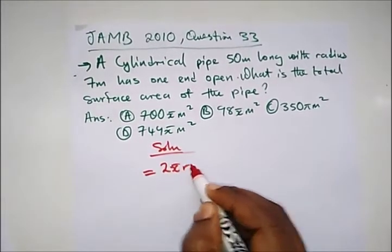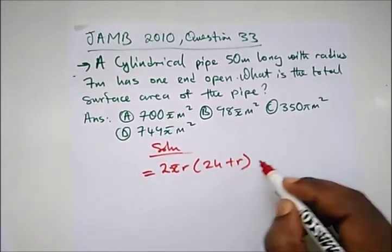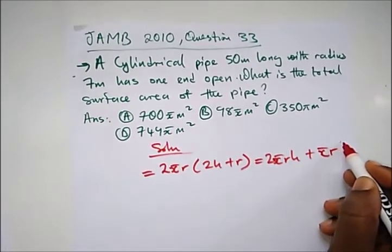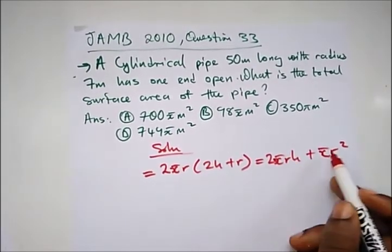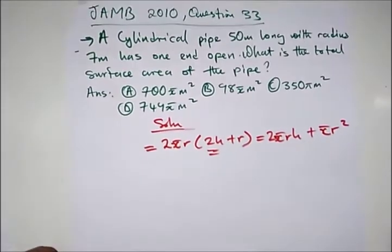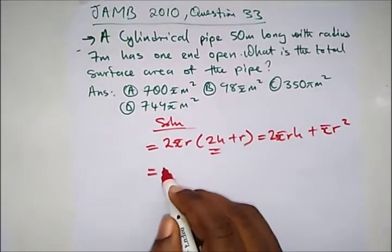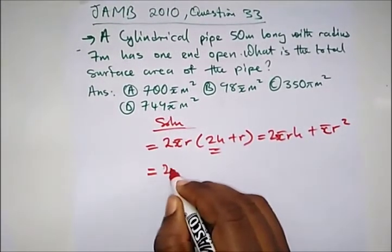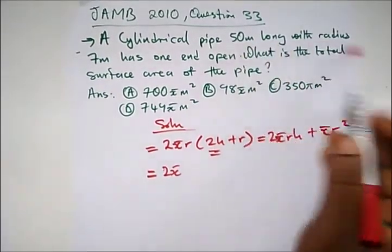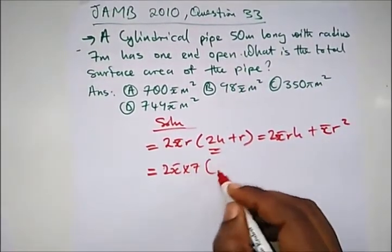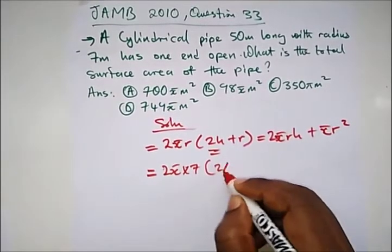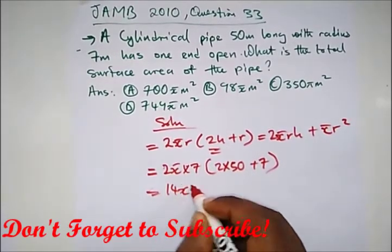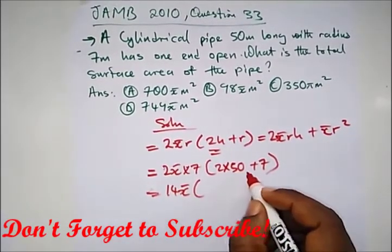The total surface area is the curved surface area plus the area of the two circles. If you take out the common factor you get the combined formula. We are not given a numerical value of pi so the answer will be in terms of pi. We have 2πr(h + r), where r is 7 and h is 5, giving us 14π times (50 + 7).